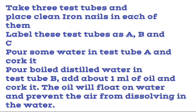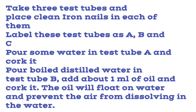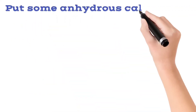In test tube B, pour boiled distilled water, then add about one ml of oil and cork it. The oil will float on the water and prevent the air from dissolving in the water, so air will not enter the water.